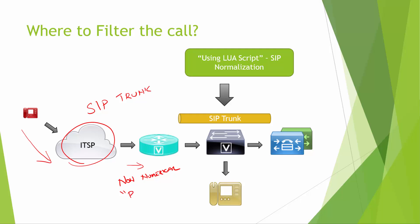Some examples of non-numerical ANI strings include values like 'restricted', 'anonymous', or other non-numerical strings. When such calls are sent to Unified CM, the digit analysis engine doesn't have the capability to process those non-numerical strings before version 9.0, so it simply drops those calls.